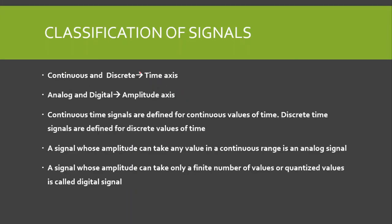First are continuous and discrete time signals. For continuous and discrete, we need to see the time axis, that is the x-axis. Continuous time signals are defined for continuous values of time. Discrete time signals are defined for discrete values of time, so in a discrete time signal the time is not continuous but takes discrete values.